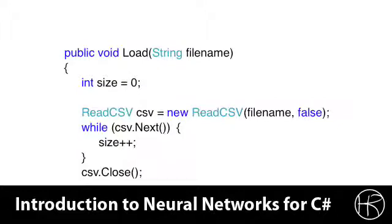We begin by calling the load routine. The load routine accepts a file name and it's going to actually read the CSV file. We actually read it twice. First to find out how many lines there are in the CSV file so that we can properly allocate the array to hold this file. And that's what you see here. We use the read CSV class, which was provided by the download for both the book and the class.